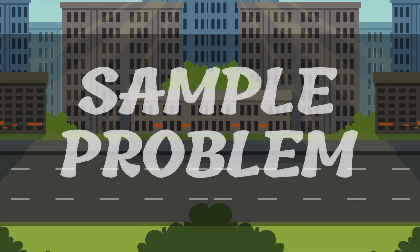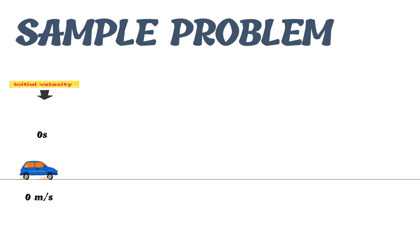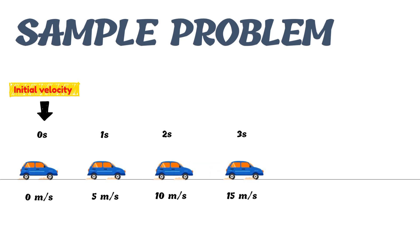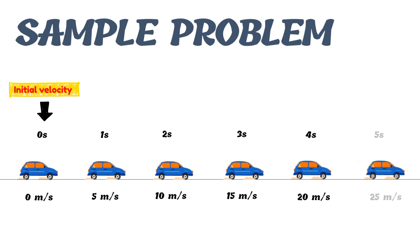Now let us have a sample problem. The velocity of the car was zero at the start, which is the initial velocity. At the end of 1 second, the velocity was 5 meters per second. At the end of 2 seconds, it was 10 meters per second. At the end of 3 seconds, it was 15 meters per second. At the end of 4 seconds, it was 20 meters per second. And at the end of 5 seconds, the velocity was 25 meters per second, which is the final velocity.